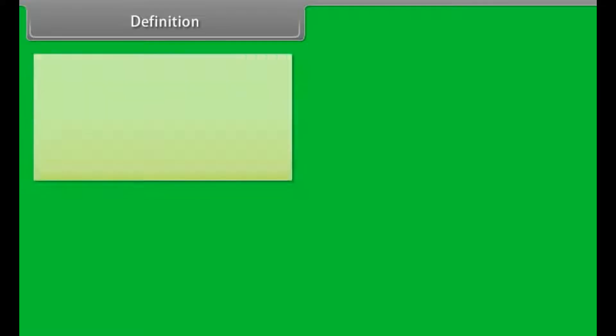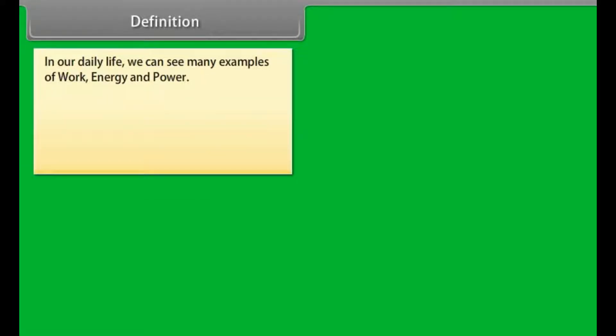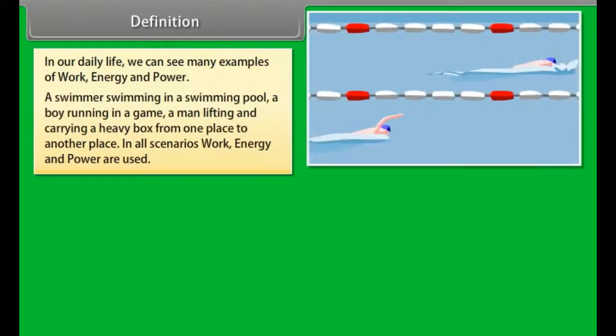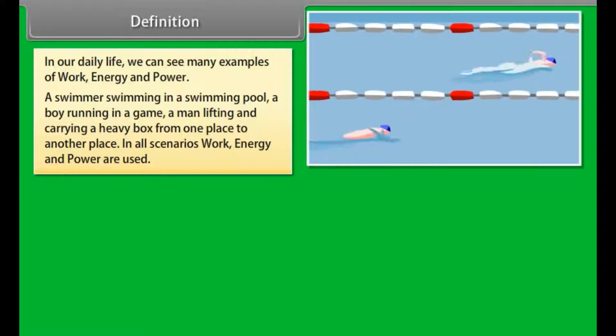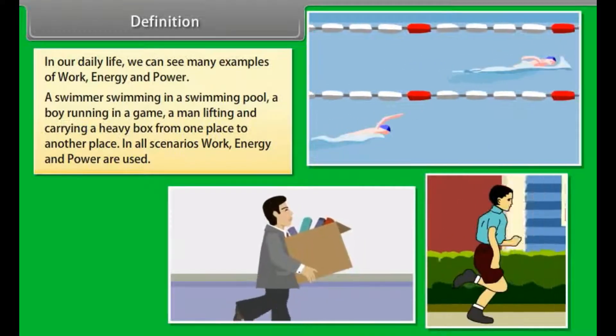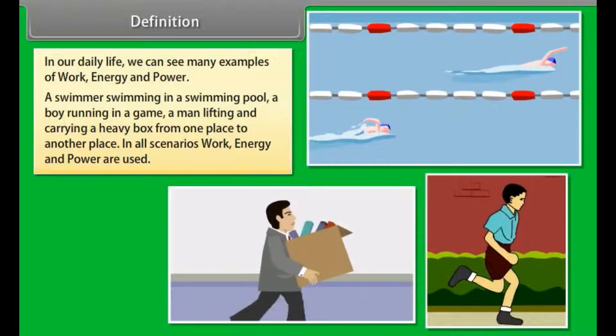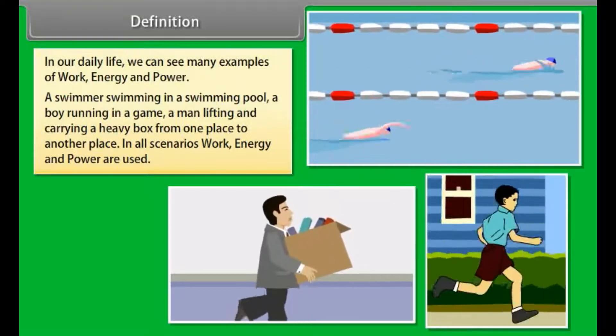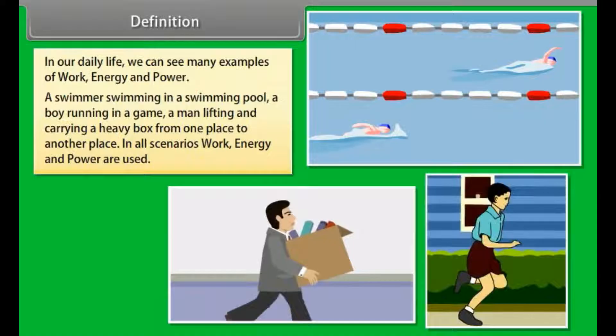Definition. In our daily life, we can see many examples of work, energy and power. A swimmer swimming in a swimming pool, a boy running in a game, a man lifting and carrying a heavy box from one place to another place. In all scenarios, work, energy and power are used.